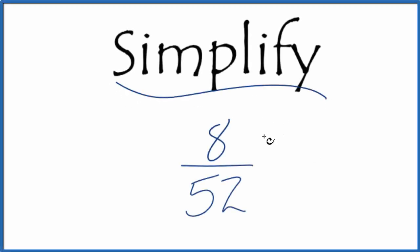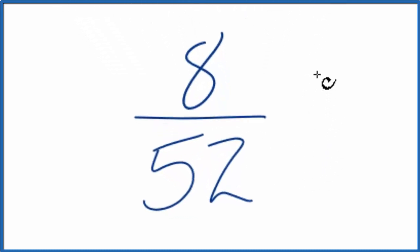If you're asked to simplify the fraction 8 over 52, here's how you do it. What we're trying to do is find another fraction that's equivalent, has the same value, but we have the numerator and the denominator in their lowest terms.